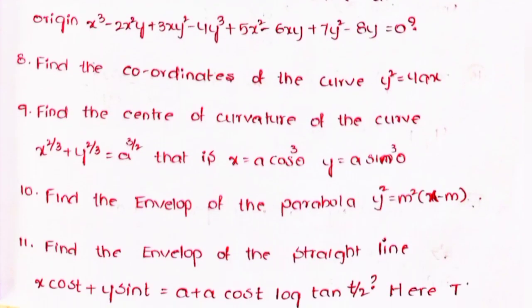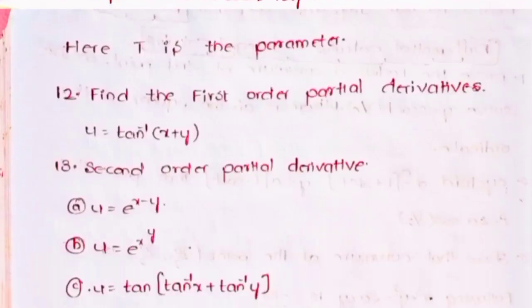Tenth, find the envelope of the straight line x·cos t + y·sin t = a + a·cos t·log(tan(t/2)), where t is the parameter.